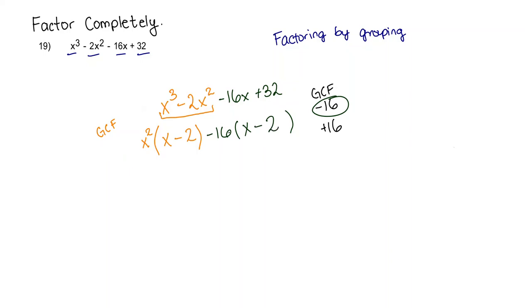And that's going to leave me inside with x minus 2. Now I'm going to take out my GCF from my entire situation here. Because now I only have two terms. So my GCF for these two terms is going to be x minus 2.